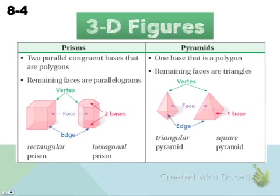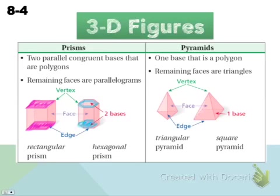With a prism, we're going to have two bases. For this rectangular prism, there's a base at the top and an identical base down at the bottom — these are rectangles, so this is called a rectangular prism. And then if you look at the one next to it, we've got a hexagon base at the top and a hexagon base at the bottom, so we call this a hexagonal prism. Prism means it has two bases.